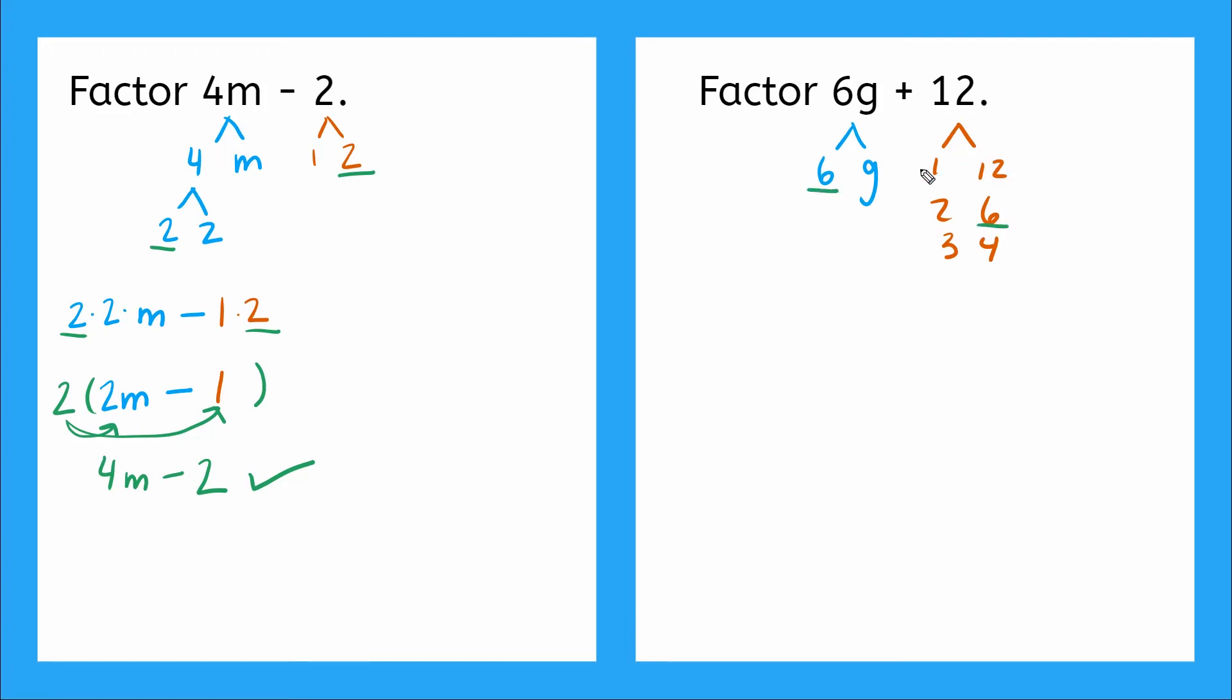So for my 12, I have a few different sets of factors, but since the 6 is the only matching one, I'm going to forget about this one and forget about this one for now. So let's rewrite these using their factors. So for my first term, I'd have 6 times g plus 2 times 6. So now I'm going to factor out my matching factors. So the 6s are my matching factor. I'm taking the 6s out and I'm putting my parentheses down.